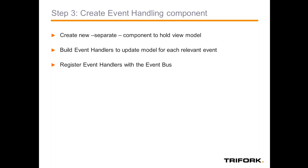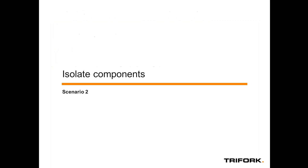We have to create a new and separate component to hold the view model. If we don't build it in a separate component, we will not be able to distribute it later on. We build event handlers that update that model for each relevant event. All these events are passed on the bus by the components where they happen, so we need to register the event handler with the event bus so that all events are handled there. And once you've done that, that's basically it — that's all we need to do to create a new view model in an existing application. This is the simplest scenario.